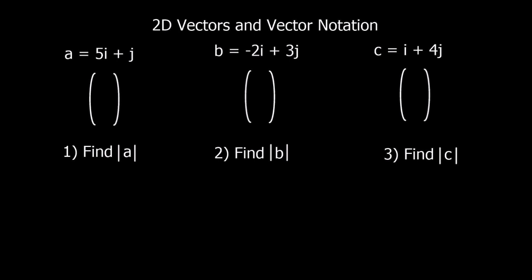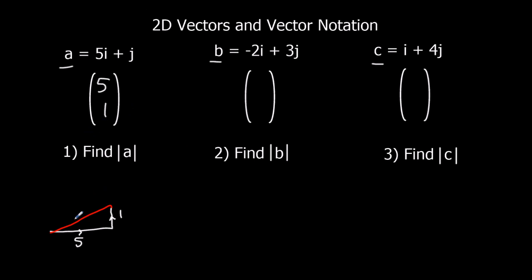Now we're going to look at mod A, mod B, and mod C — what that means is the magnitude, the distance of the line. So if we've got a vector along 5, up 1, the magnitude means how long is that line. We use Pythagoras to work it out: the hypotenuse squared is 5 squared plus 1 squared, so 25 plus 1 is 26. Therefore mod A is the square root of 26.